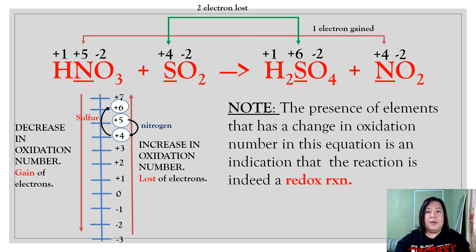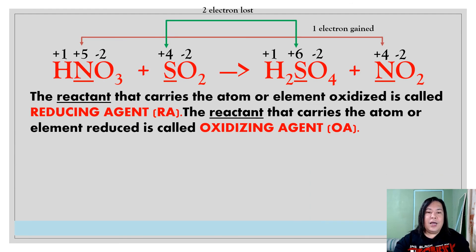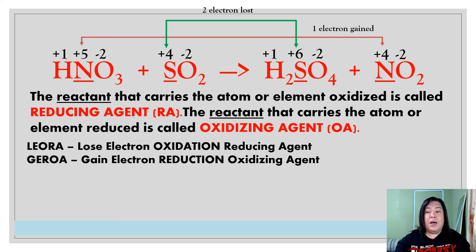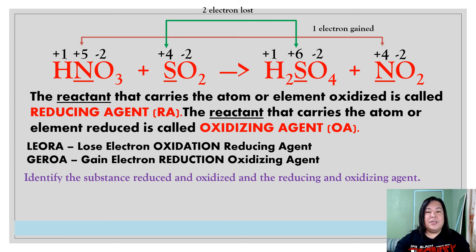That is how to identify if an equation is redox or non-redox. The reactant that carries the atom or element oxidized is called the reducing agent. The reactant that carries the atom or element reduced is called the oxidizing agent. You will now use the two nomenclatures — LEORA and GEROA — in identifying the reduced substance, the oxidized substance, the oxidizing agent, and the reducing agent.